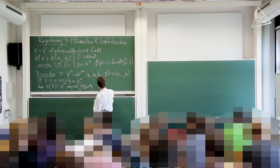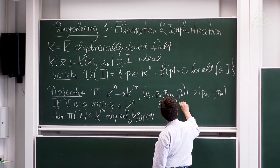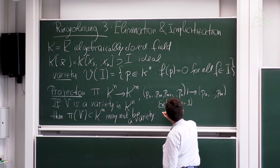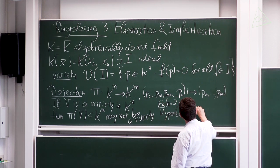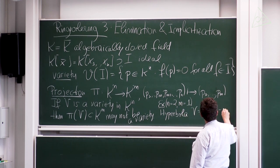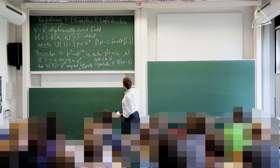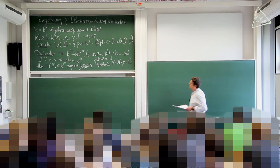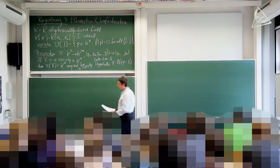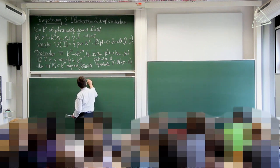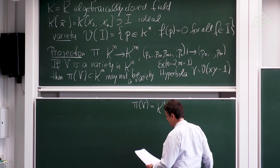For example, if n equals 2 and m equals 1, take the hyperbola, which is the zero set of xy minus 1. That's a variety — a quadratic curve in the plane — but the image under projection onto the x-coordinate is all points except the origin.